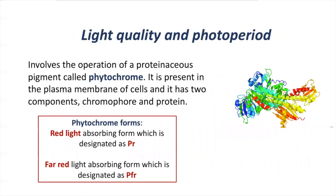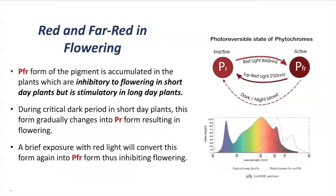When learning about plant response to photoperiod, we also need to pay attention to light quality. Photoperiodic response involves the participation of a proteinaceous pigment called phytochrome, located at the plasma membrane in cells. It has two different forms: PR and PFR. PR is related to red light absorption and PFR is related to far-red absorption. PFR accumulation can inhibit flowering in short day plants, but will do the exact opposite in long day plants, meaning it promotes flowering induction in long day plants.